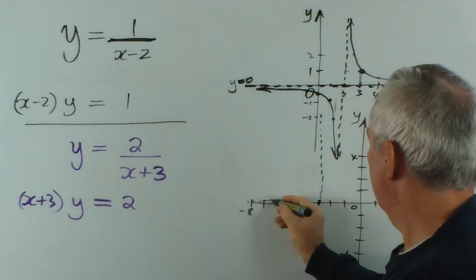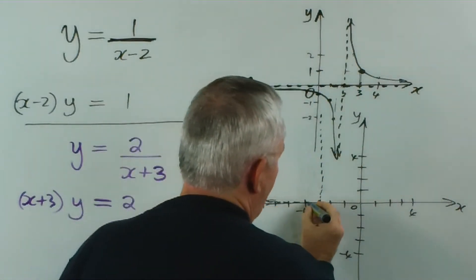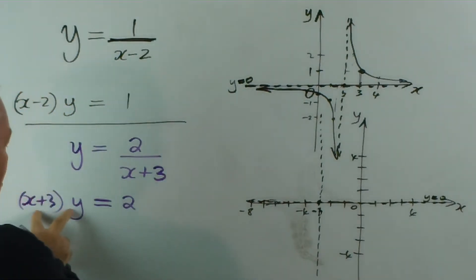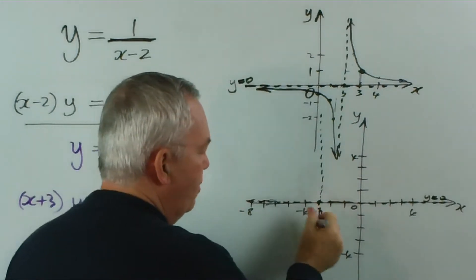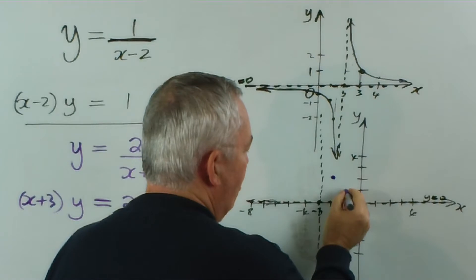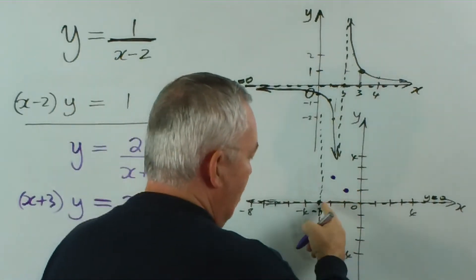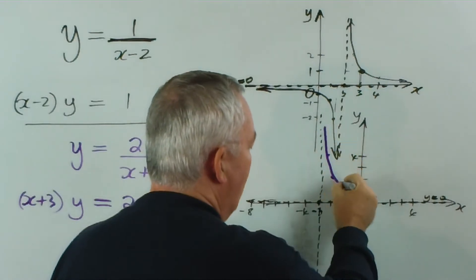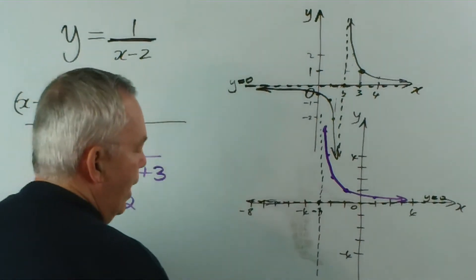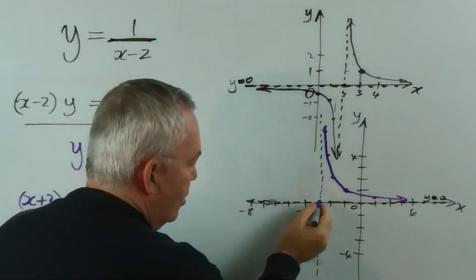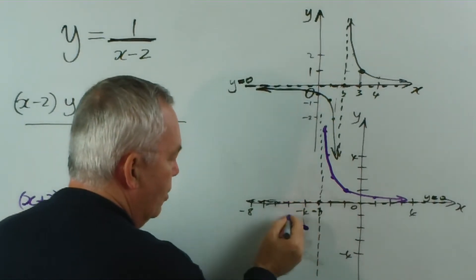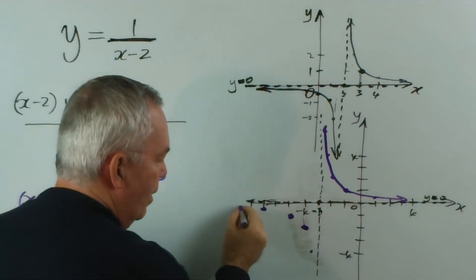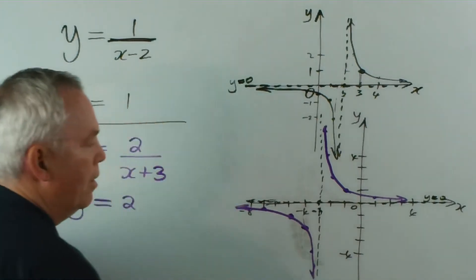How do we locate the graph? We're looking for a product of numbers that makes 2. Starting at our new origin — which is at x equals negative 3 — across 1 and up 2, or across 2 and up 1, because 2 times 1 makes 2. If I want more points, I might go across 4 and up one-half. There is that part of my graph. And if I wanted the other branch, I still need a product of 2: minus 1 times minus 2, or minus 2 times minus 1, or minus 4 times minus one-half. And there it is. Quite easy, isn't it?